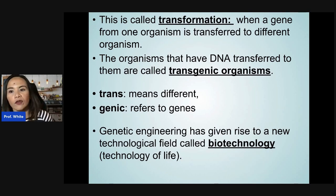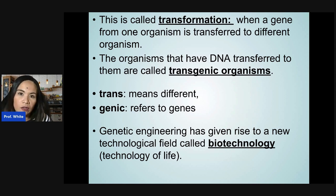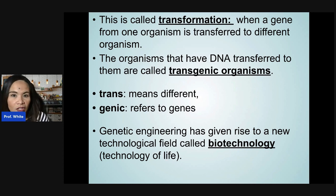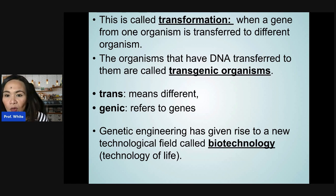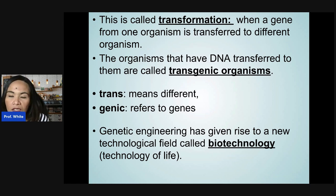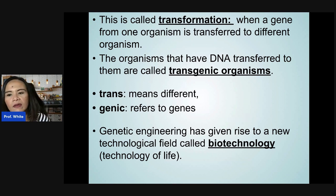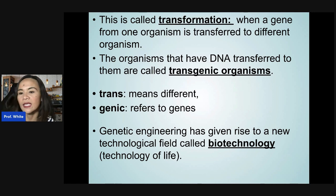This process is called transformation — when a gene from one organism is transferred to a different organism. The human insulin gene is transferred to the bacterial plasmid, causing its transformation. Organisms that have DNA transferred to them are called transgenic organisms. This has given rise to a new field called biotechnology, or the technology of life.